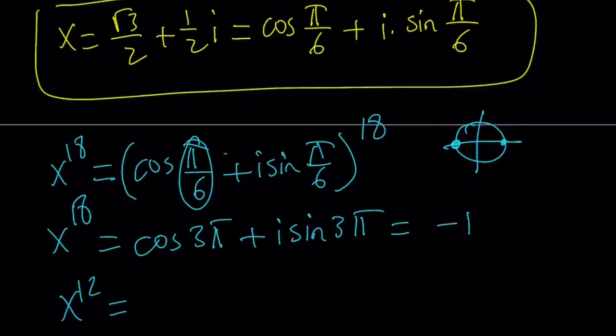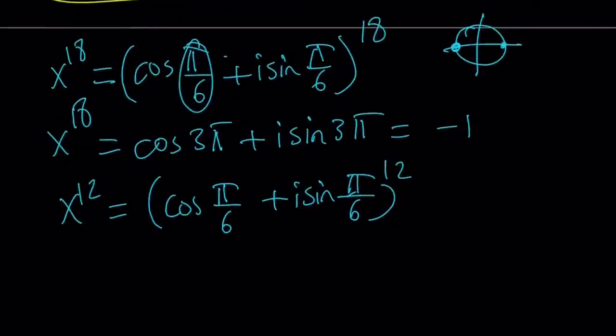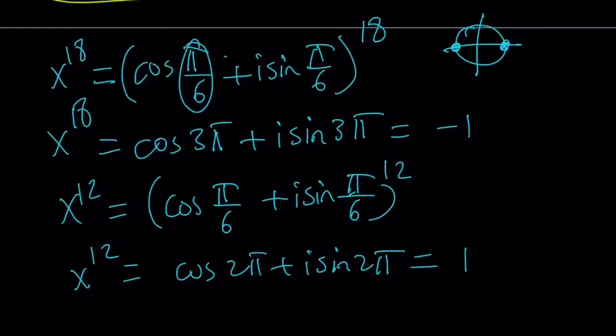How about 12th power? You're just going to multiply by 12. That should be easy too. You're going to get x to the power 12 equals cosine of 2 pi plus i sine 2 pi, because pi over 6 times 12 is equal to 2 pi. Cosine of 2 pi is the same as cosine of 0, which is equal to positive 1. And sine of 2 pi is 0, just like sine of 3 pi.